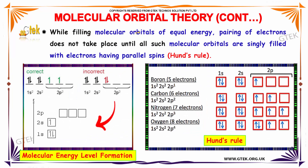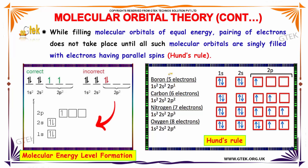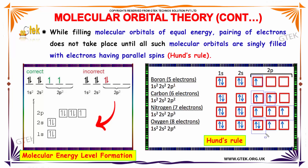When filling the molecular orbitals of equal energy, pairing of electrons does not take place until all such molecular orbitals are singly filled with electrons having parallel spins. That is referred to as Hund's rule. You can see it here — instead of pairing, I made a single. Instead of pairing, I made three singles. Once I get more electrons, now I am trying to pair them. This is referred to as Hund's rule.